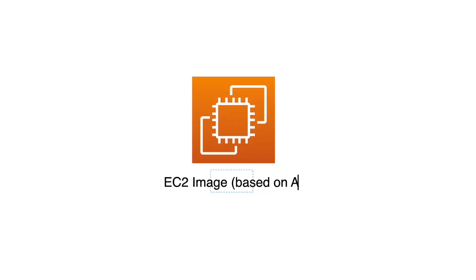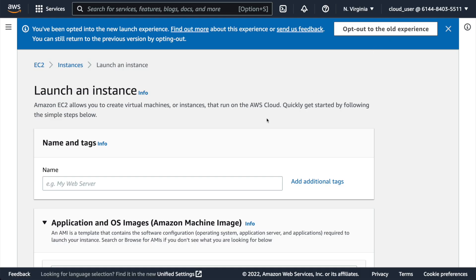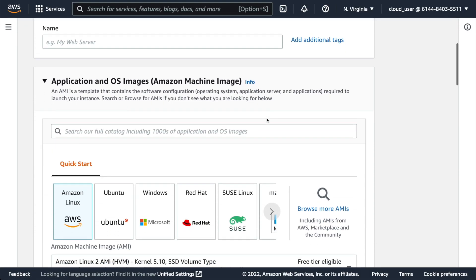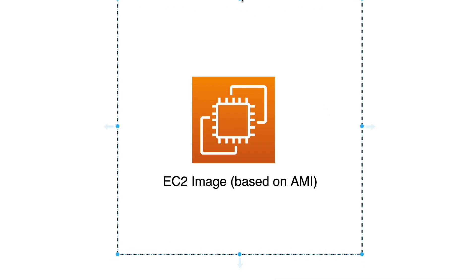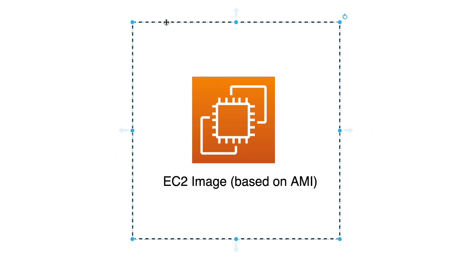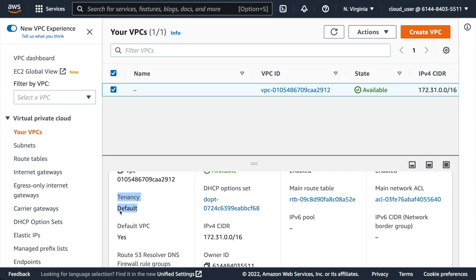The first step in this additional challenge is to start off with an EC2 image — you can choose an AMI from the marketplace. This step should be simple. AWS will deploy some default networking components into your account, which robs you of a learning opportunity, but you'll use those for now and replace them with custom-built ones later.